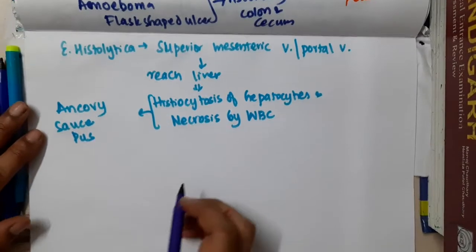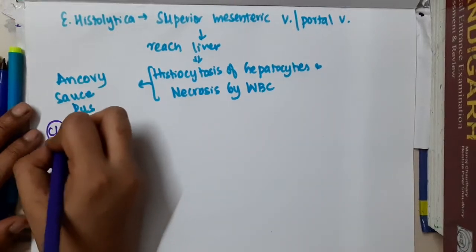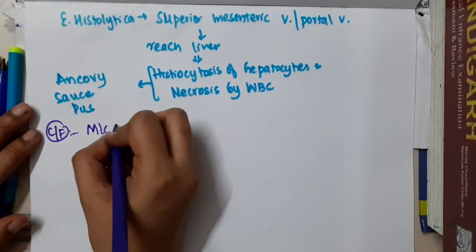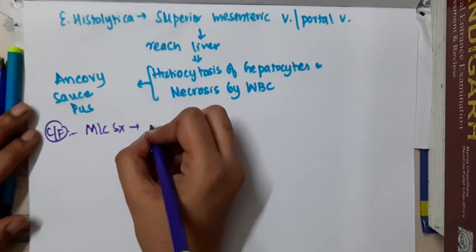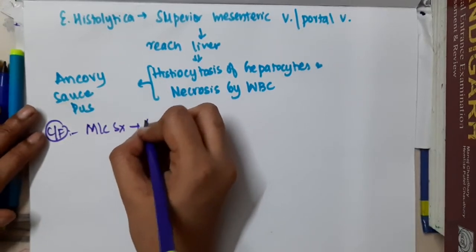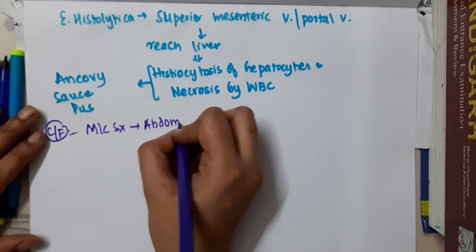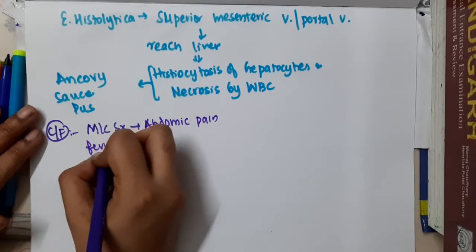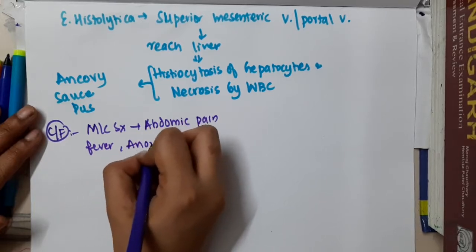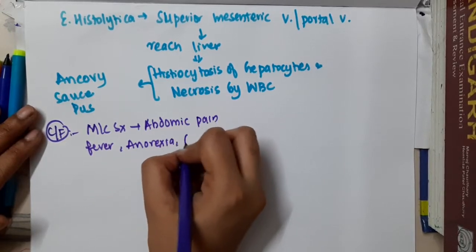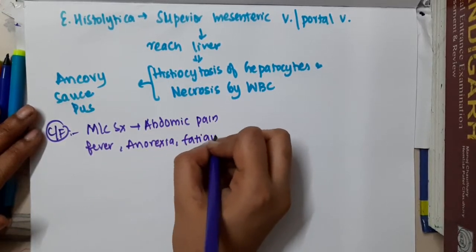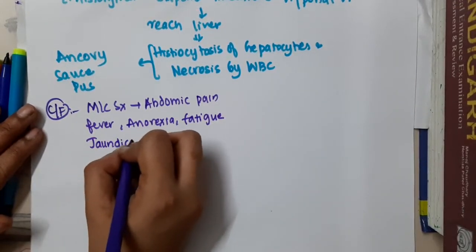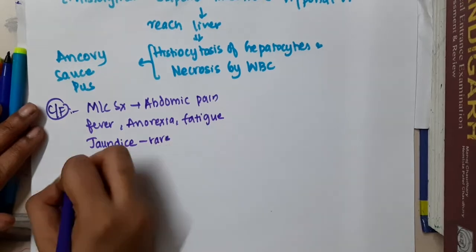Looking at the clinical features of amoebic liver abscess: the most common symptom is abdominal pain. Other symptoms like fever, anorexia, and fatigue may also be seen. Jaundice is seen very rarely in amoebic liver abscess.